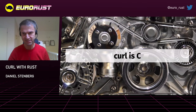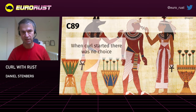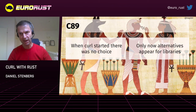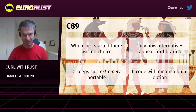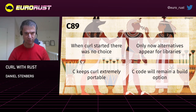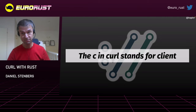Curl is C. This picture is from around the time when we created Curl — back in 1998. Back when we started Curl, there really was no choice about which language to use if you wanted to do something like Curl and libcurl: a library that would be available on virtually all platforms everywhere. C has been the factor that has kept Curl portable and available virtually everywhere. The C in Curl is not for the language; it's actually for the client. That's how I came up with the word.